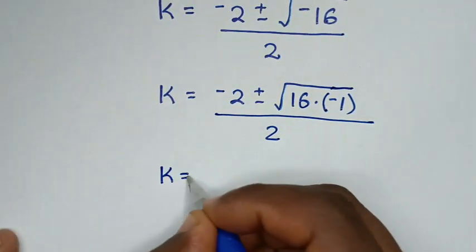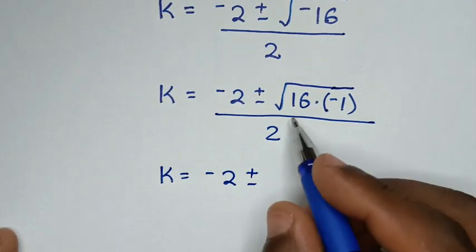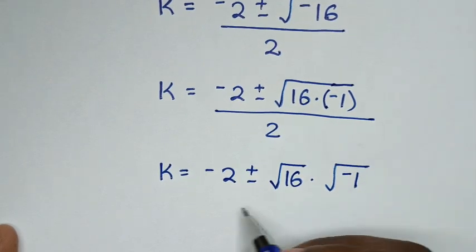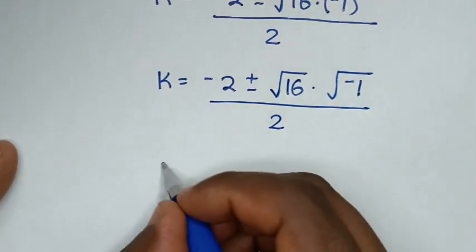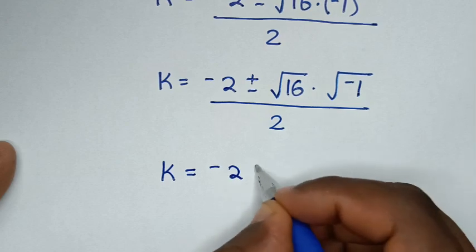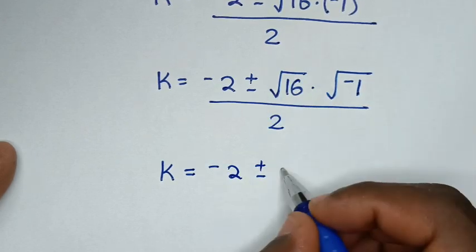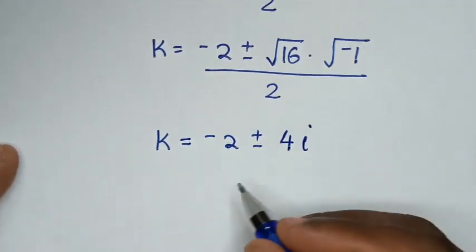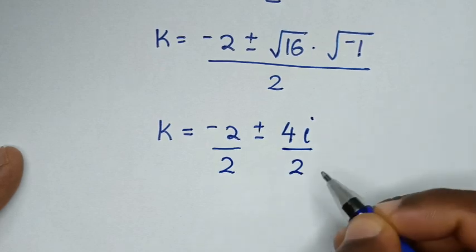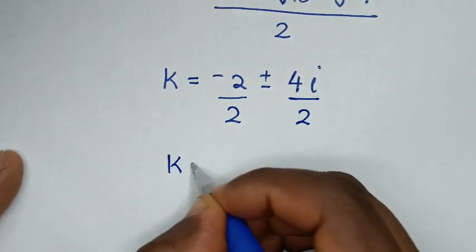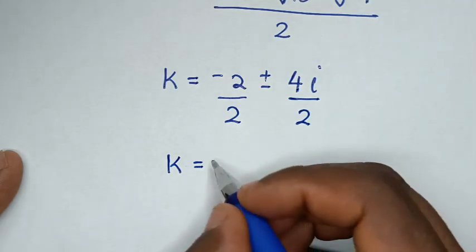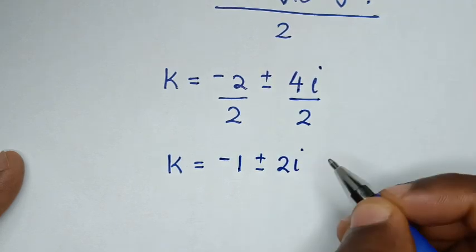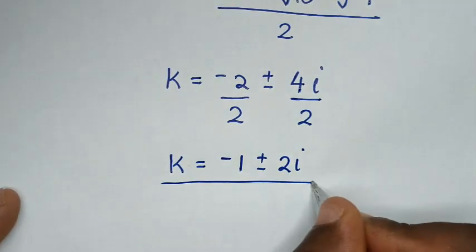So it will be k equals negative 2 plus or minus — separating — square root of 16 times square root of negative 1, over 2. The square root of 16 is 4, and the square root of negative 1 is i, so k equals negative 2 plus or minus 4i, over 2. Dividing by 2: k equals negative 1 plus or minus 2i. So we have two complex solutions.